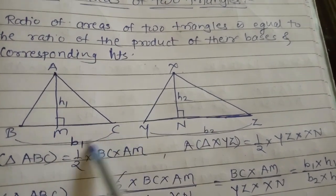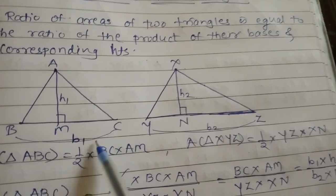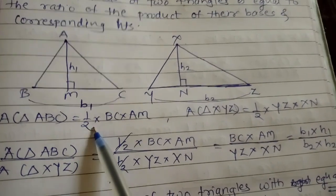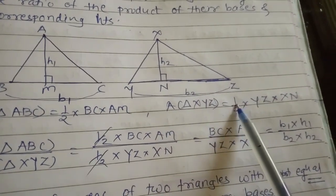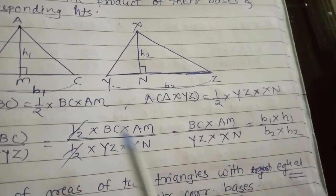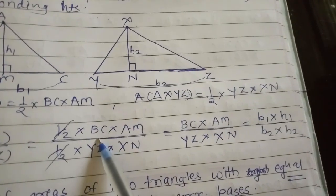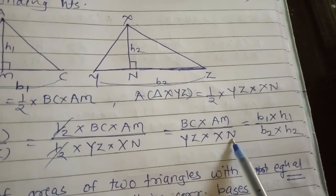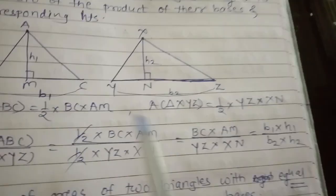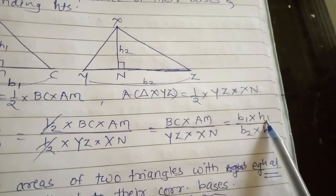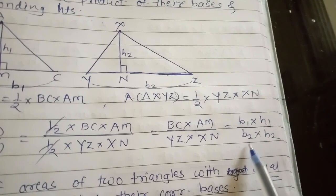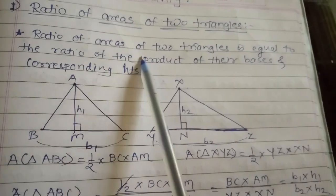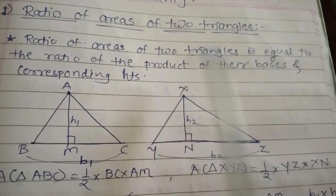When we take the ratio of these two triangles — area of triangle ABC upon area of triangle XYZ — we get half into BC into AM, divided by half into YZ into XN. The halves cancel, leaving BC into AM upon YZ into XN, that is B1 into H1 upon B2 into H2.